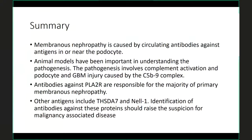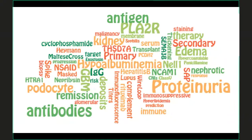In summary: membranous nephropathy is caused by circulating antibodies against antigens that are in or near the podocyte — in most cases on the podocyte, but not always. Animal models have been important in understanding pathogenesis, involving complement activation, largely caused by the C5b-9 complex. Antibodies against PLA2R are responsible for the majority of primary membranous nephropathy, and there are a number of emerging antigens that also appear to be causative. The field is expanding rapidly. I'll end again with this word cloud, and hopefully these words will mean a little bit more to you now. With that, I'm happy to take any questions.